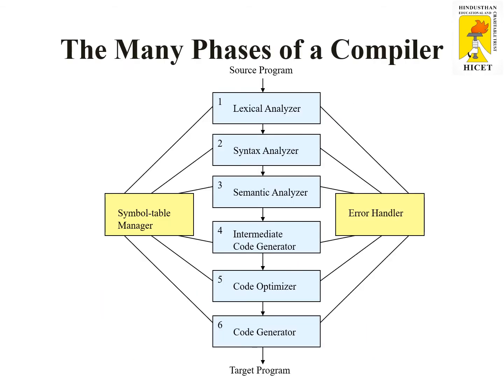In any programming language, the first step is writing the program, the second step is compiling the program, and the third step is executing the program. Once you have written a program, you are going to compile. The same thing happens in C programming language also. Once you have pressed compilation, what are the steps that take place?